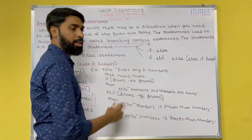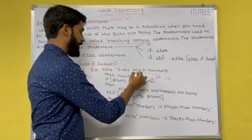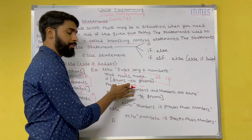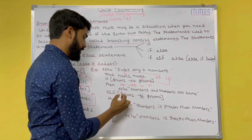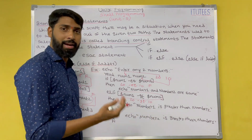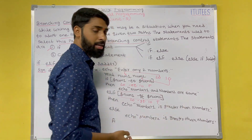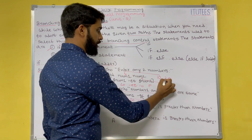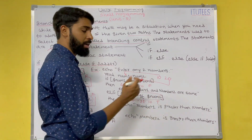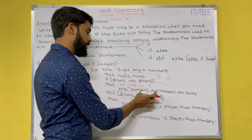Here is the else-if ladder example. Echo 'Enter any 2 numbers', read num1 num2. If I enter 20 and 10: $num1 is 20, $num2 is 10. First, 20 -eq 10 is false. Then we check 20 -gt 10 — where -gt means greater than — and that is true, so we print 'number 1 is greater than number 2'. If I enter 10 and 20, both expressions are false and we print 'number 2 is greater than number 1'. If I enter 10 and 10, statement 1 is true and we print 'number 1 and number 2 are same'.